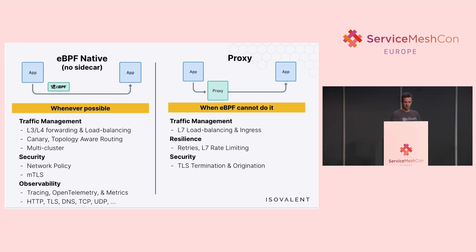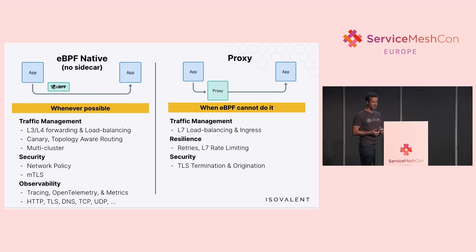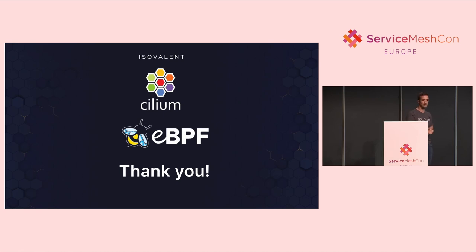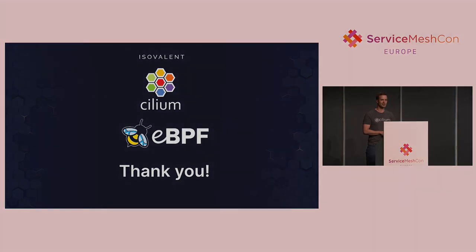What can we do in eBPF natively, and where do we still need a proxy? There's a lot we can already do natively: traffic management, L3/L4 forwarding, load balancing, canary topology routing, multi-cluster network policy, MTLS, tracing, OpenTelemetry, metrics, and HTTP parsing. What we cannot yet do includes layer 7 load balancing, layer 7 rate limiting, and TLS termination or origination — for these we still inject a proxy, but just one proxy rather than two sidecar proxies. The performance benefits can be significant — we see clear differences in HTTP parsing between eBPF natively and a sidecar. If you're interested in eBPF or running a service mesh without sidecars, feel free to catch me outside. Thank you.